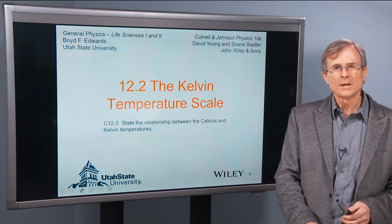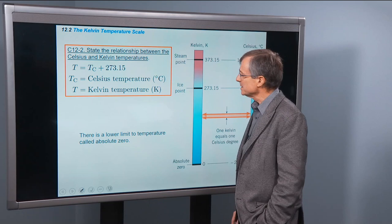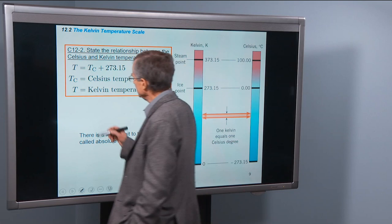The Kelvin temperature scale. What's that? Sometimes called the absolute temperature. State the relationship between the Celsius and Kelvin temperatures.